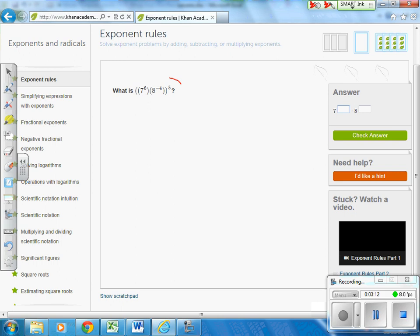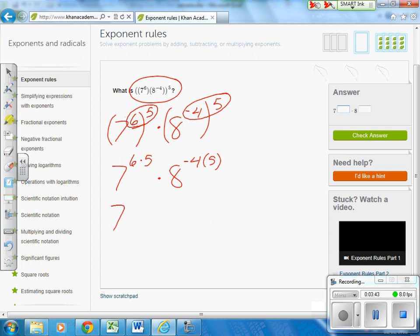If we take this problem and break it apart, this is 7 to the 6th power to the 5th power times 8 to the negative 4th to the 5th power. What I'm going to do is multiply exponents because it's a power to a power. So this will be 7 to the 6th times 5 times 8 to the negative 4th times 5. So I get 7 to the 30th times 8 to the negative 20th.